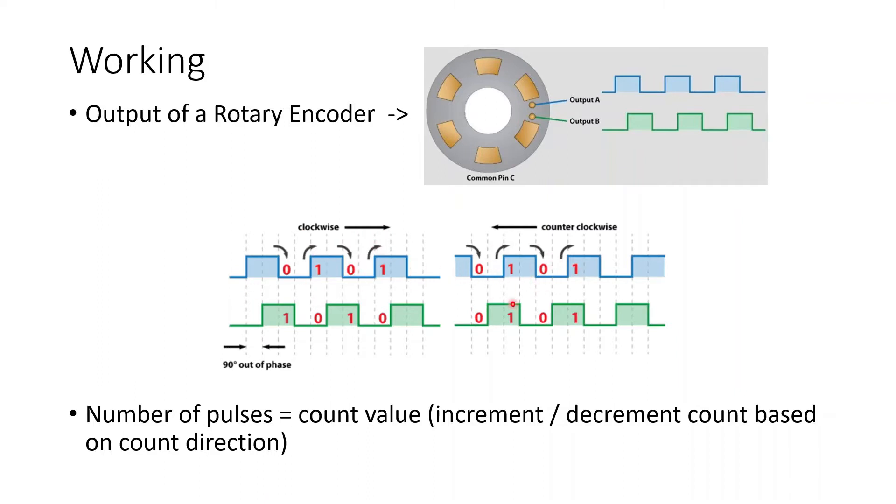And the exact opposite of this, when the first output wave is rising from 0 to 1, the second wave is just in high position, it means that it has been rotated in the counter clockwise direction. So you can decrement the counter. So this is how the rotary encoder works. Number of pulses would be the count value, which can be incremented or decremented based on the count direction, whether you are rotating it in clockwise direction or anticlockwise direction. We'll analyze more how to do this in the upcoming slides.